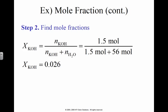If I want the mole fraction of potassium hydroxide, I take this divided by the total, which is 0.026. If I wanted it for water, I'd take 1 minus 0.026, 0.974.